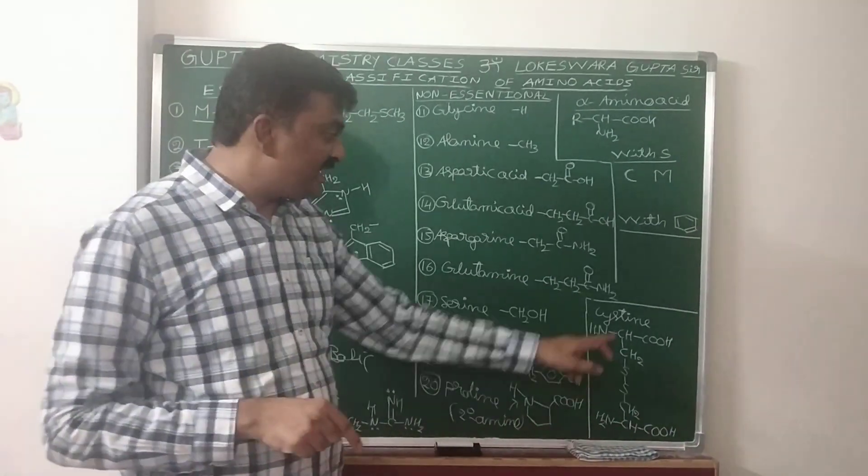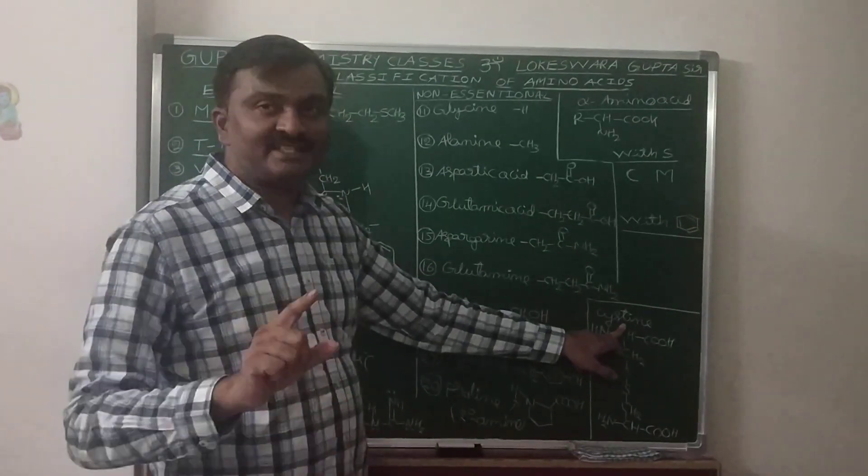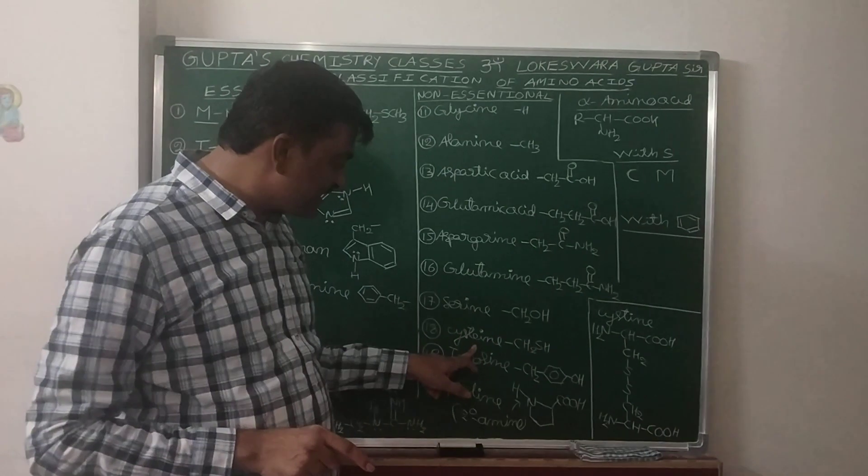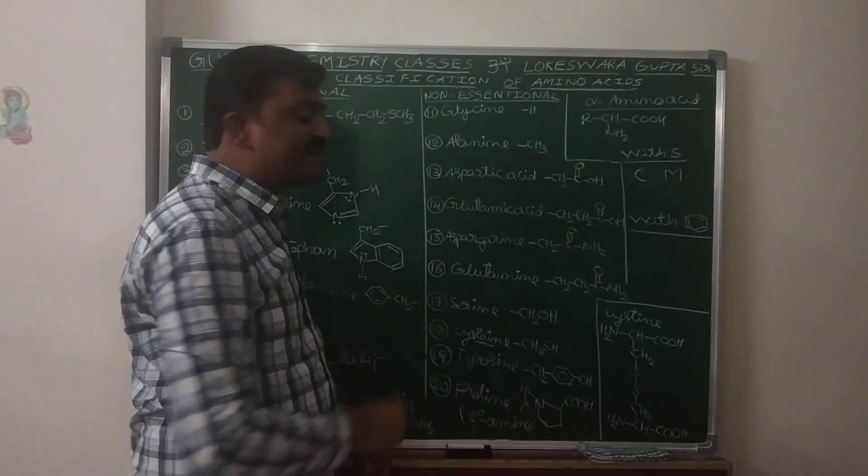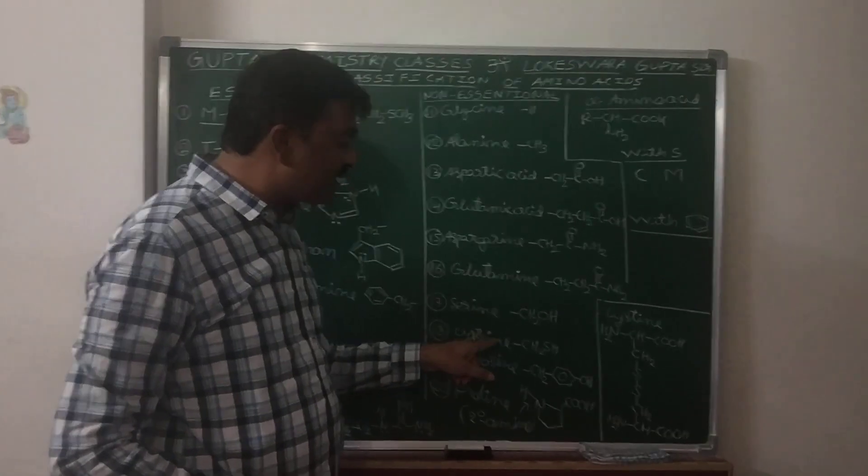Here Cystine is not correct. Cysteine E-I-N-E, this one is the amino acid. Its dimeric oxidized form is this one.